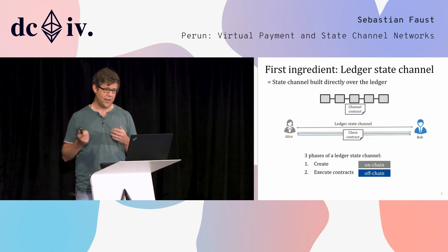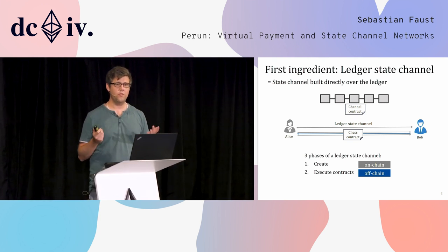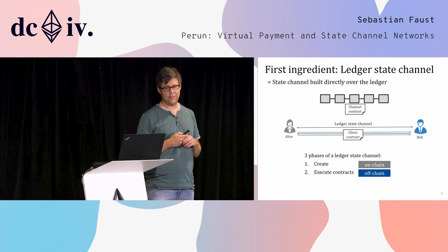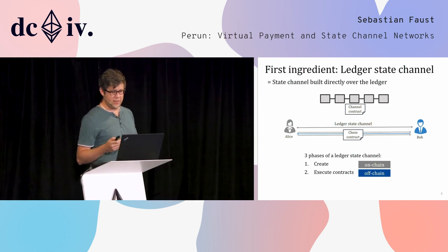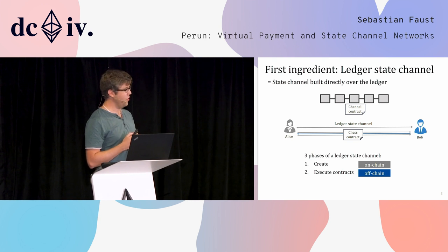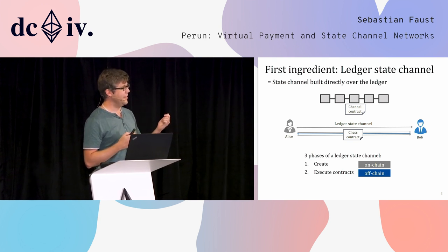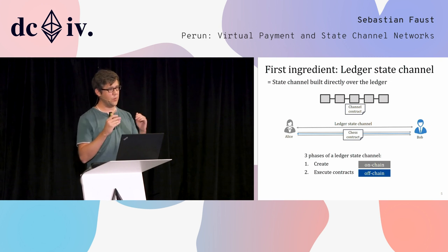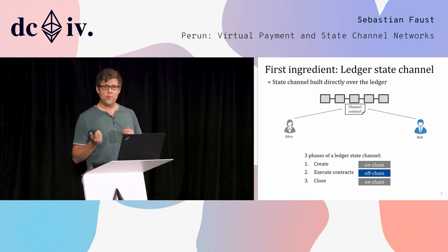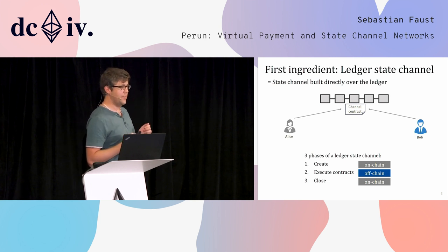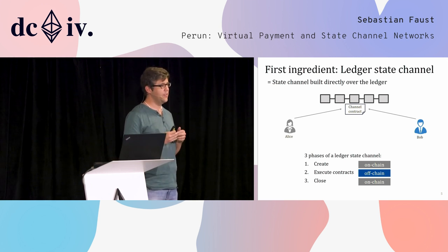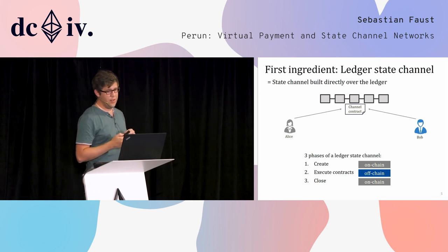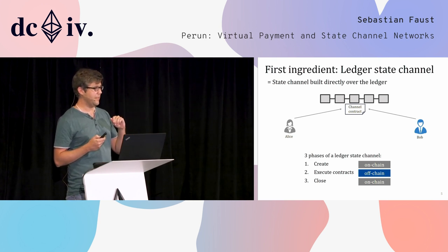We support generalized state channels where you can not only run a chess contract but several chess contracts or completely other games in this ledger state channel. The key point is that the execution of contracts — the update of the state — is carried out off-chain, without Alice and Bob needing to interact with the blockchain. When Alice and Bob no longer want to use the ledger state channel, they can settle and close it, which again requires on-chain communication. This is the three-phase structure of the basic ledger state channel.